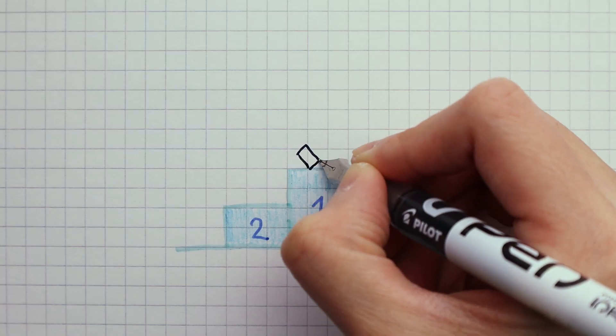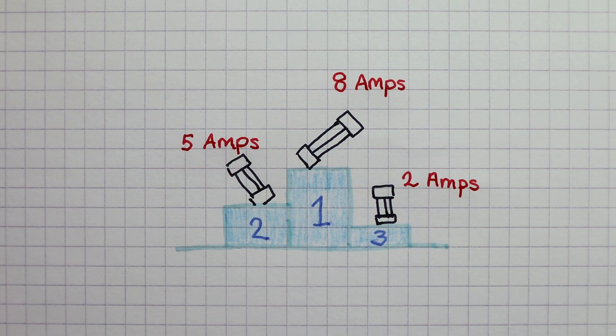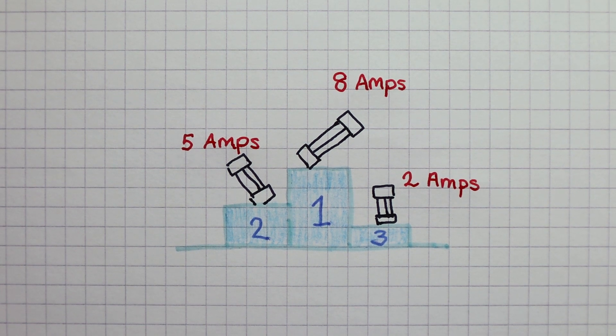Fuses have different ratings. A fuse with a rating of 8 amps means that it will break when the current is at 8 amps.